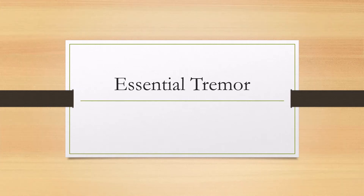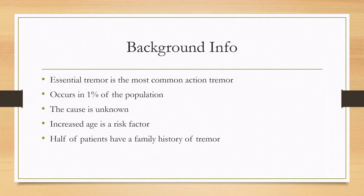Let's talk about essential tremor. A common scenario as a clinician is that a patient can be referred to you for a tremor, and you'll have to differentiate between essential tremor and Parkinson's tremor, which are two of the most common tremors. Essential tremor is the most common action tremor, and the main other disease in the differential is enhanced physiologic tremor. Essential tremor occurs in 1% of the population and the cause is largely unknown.